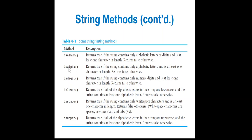The isdigit() method returns True if the string is composed of pure digits (0–9) only. No decimal points — a period is considered a special character and is not accepted as a digit. The islower() method checks if the string is in lowercase, considering alphabetic letters only.